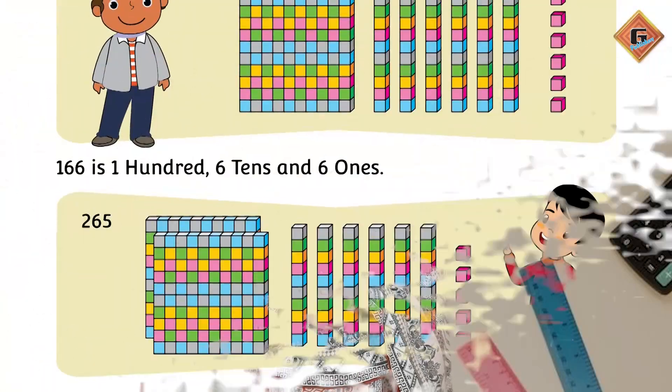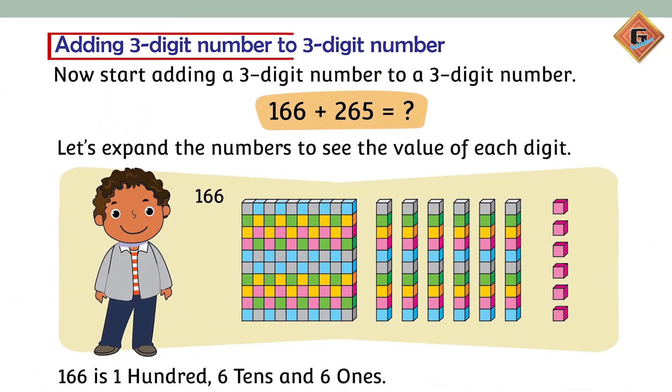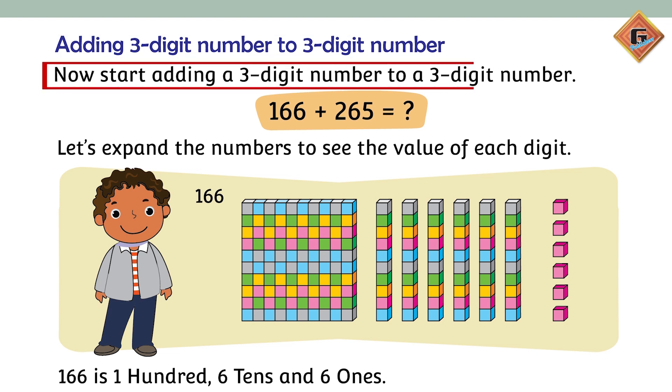On page 56, the title is adding three-digit number to three-digit number. Now start adding a three-digit number to a three-digit number. The digits are 166 plus 265. Humne is ki value dekhne hai.